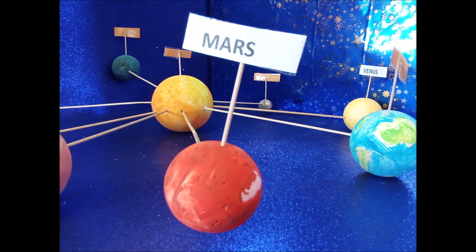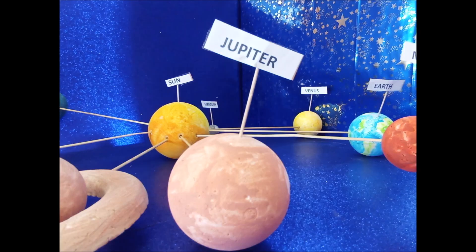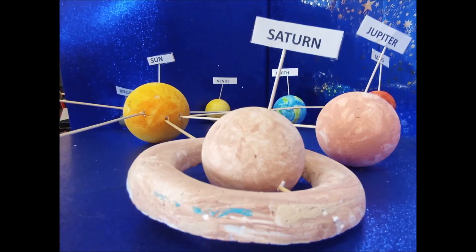Mars is called the red planet. Jupiter is the biggest planet in our solar system. Saturn is a big gas planet and it's famous for its nine rings.